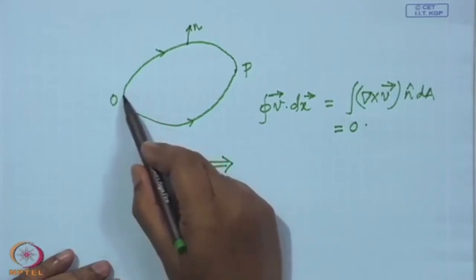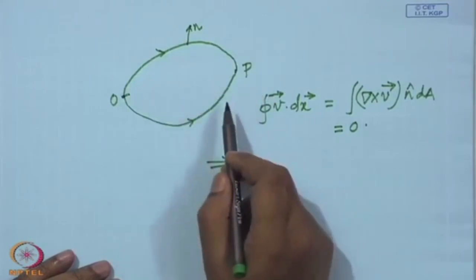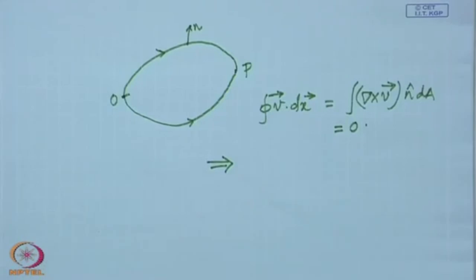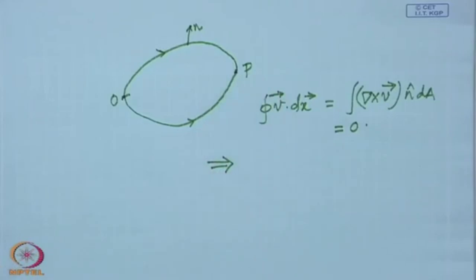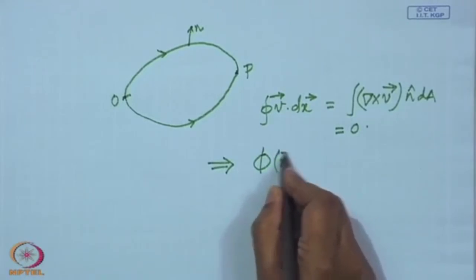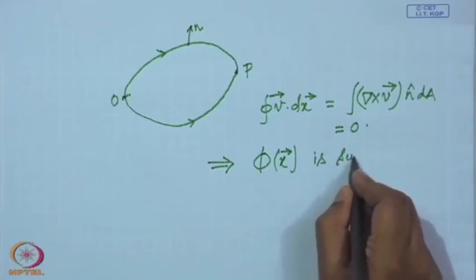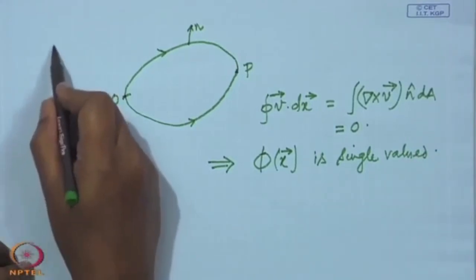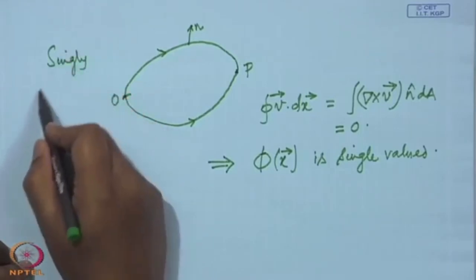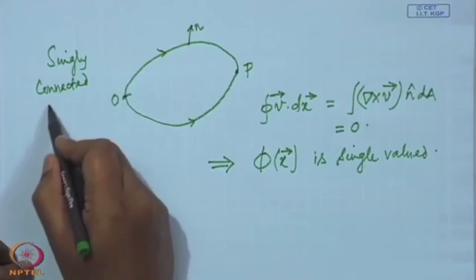From this we conclude that since V·dx is the same over all paths, V·dx — which is the difference in phi from one point to another — is the same over all paths. So as you move from O to P, whatever path you take, the change in phi is the same. Consequently, phi at P is also the same whatever path you follow — the potential phi is single-valued. This holds in a singly connected domain.